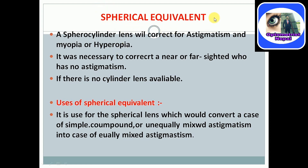Let's discuss spherical equivalent. What is a spherical equivalent, why should we do it, and what are its uses? A spherical cylindrical lens is prescribed for astigmatism combined with myopia or hyperopia. A spherical equivalent is necessary for patients who are near or far sighted with no astigmatism. Also, if there is no cylindrical lens available, we should use a spherical equivalent. It is used for the spherical lens which would convert a case of simple, compound, or unequally mixed astigmatism to a case of equally mixed astigmatism.